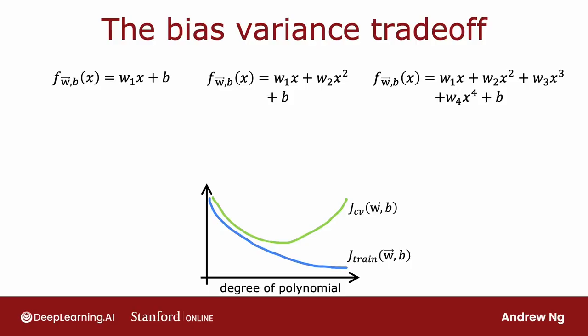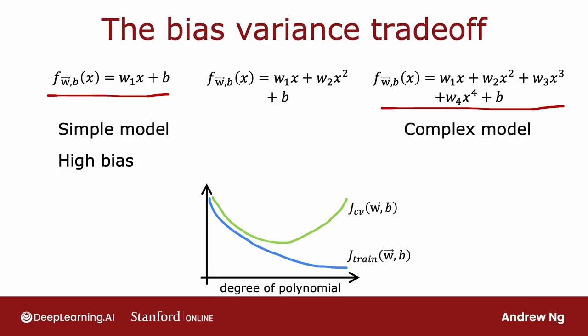Let's take a look. You saw that if you're fitting different order polynomials to a dataset, then if you were to fit a linear model like this on the left, you have a pretty simple model that can have high bias. Whereas if you were to fit a complex model, then you might suffer from high variance.